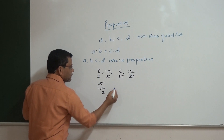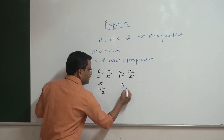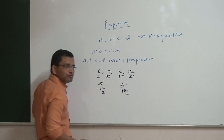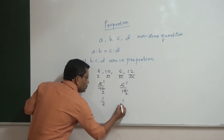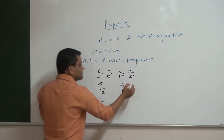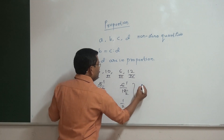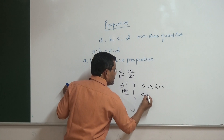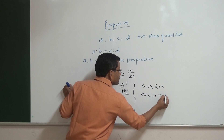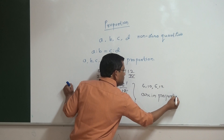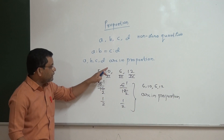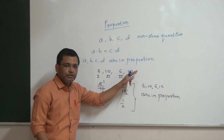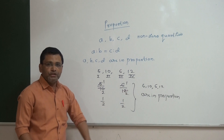First quantity upon second quantity is five upon ten, which simplifies to one upon two. And the second check is third upon fourth, that is six upon twelve, which also simplifies to one upon two. When the simplest form is the same, we can say that five, ten, six, twelve are in proportion. So when first quantity upon second quantity equals third quantity upon fourth quantity, the numbers are in proportion.